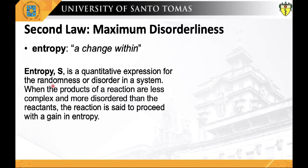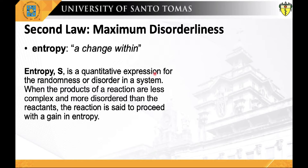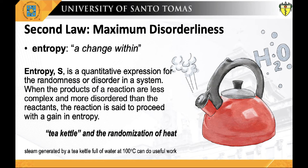Let us now define what entropy means. Entropy, indicated as the capital letter S, is a quantitative expression for the randomness or disorderliness of a system. When the products of a reaction are less complex and more disordered than the reactants, the reaction proceeds with a gain in entropy. It is positive when randomness increases, and negative when randomness or disorderliness is decreased. Entropy came from the Greek word tropos, meaning transformation or a change within. To further understand entropy in the context of biological systems, let us look into the analogy of the tea kettle and the randomization of heat.